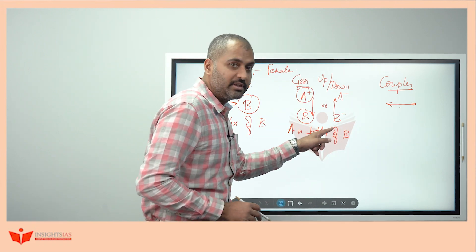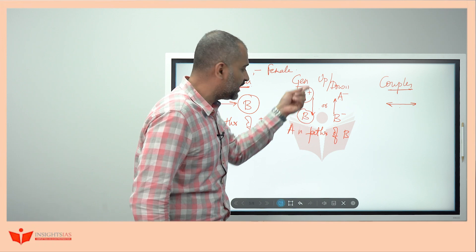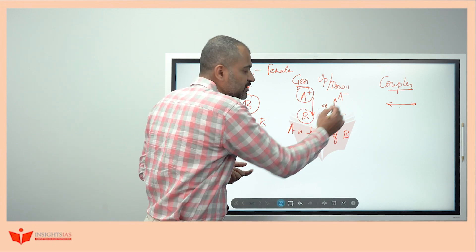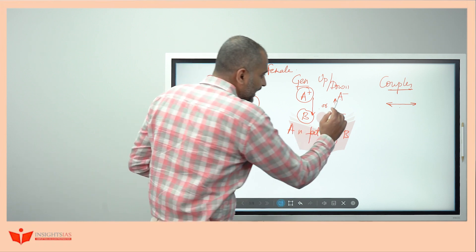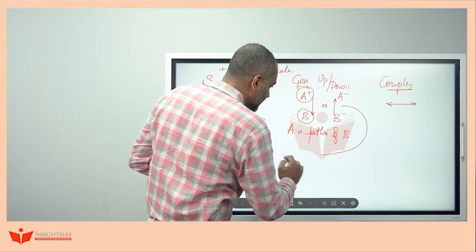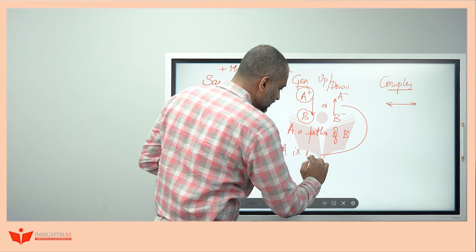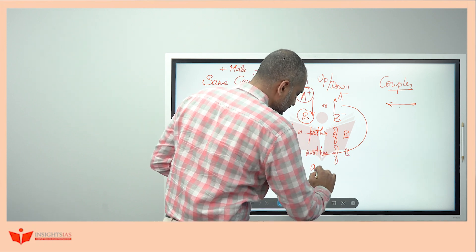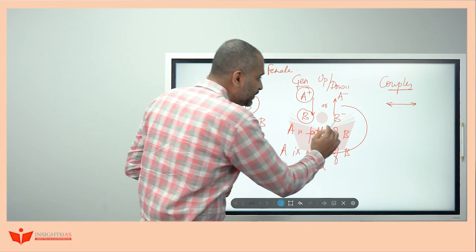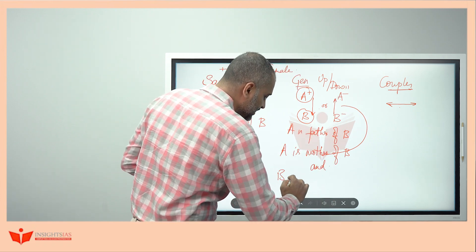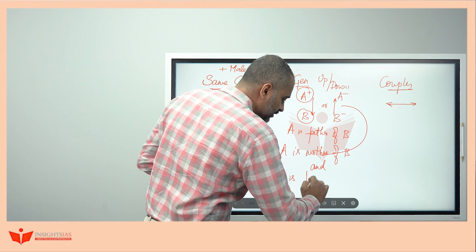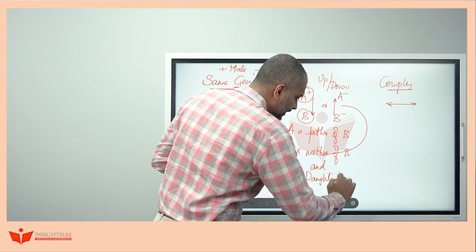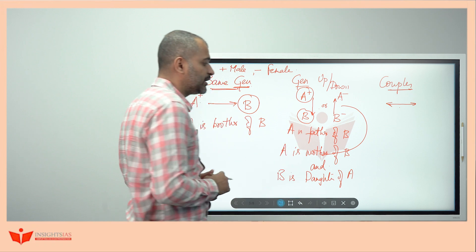Now we know the gender of both. This means A is mother of B, and how is B related to A? B is daughter of A because it's minus. We know the gender of both here.